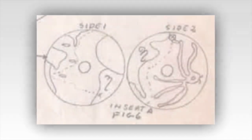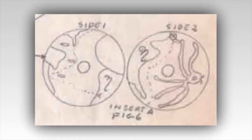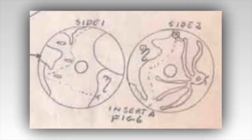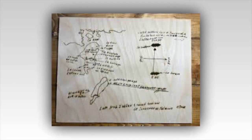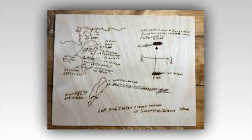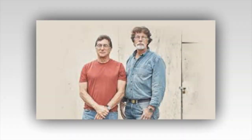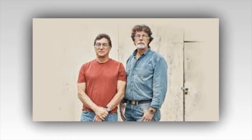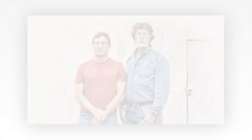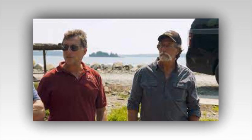Yet the allure of the map endures. It embodies the quintessential spirit of the Oak Island mystery — a blend of historical intrigue, adventure, and the promise of hidden riches. Each detail, from the cryptic symbols to the evocative place names, invites endless analysis and debate, keeping the legend alive and ever-evolving.